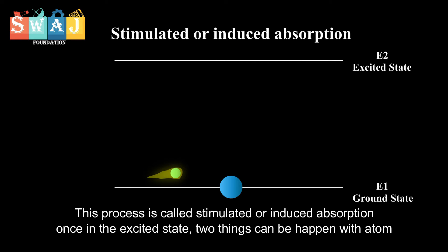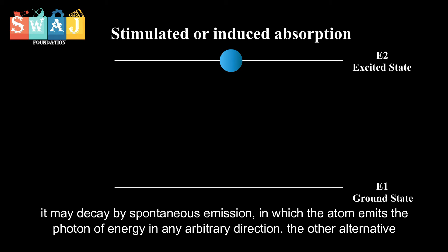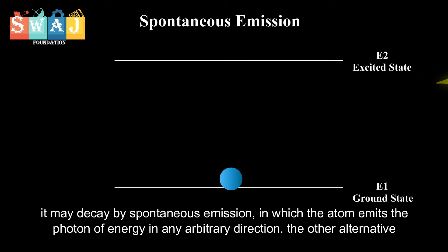Once in the excited state, two things can happen to the atom. It may decay by spontaneous emission, in which the atom emits a photon of energy in any arbitrary direction.